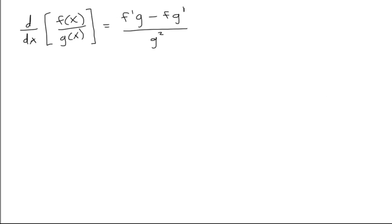Let's get right into the examples. So say we have, say we want to take the derivative of maybe 6x squared over, let's say, cos of x.